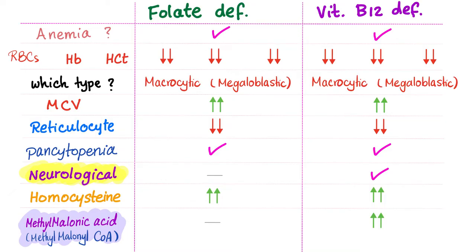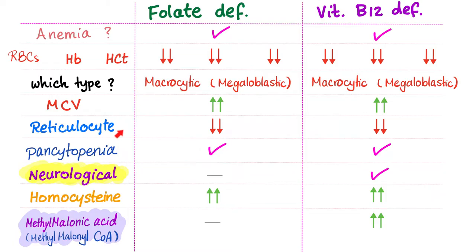Answering questions from the previous video comparing folate deficiency and vitamin B12 deficiency: both cause anemia with decreased red blood cell count, hemoglobin, and hematocrit. Both produce macrocytic megaloblastic anemia with high MCV. Reticulocytes are low in both because without folate or B12, bone marrow cannot replicate cells due to lack of DNA synthesis — so no red blood cells and no reticulocytes.